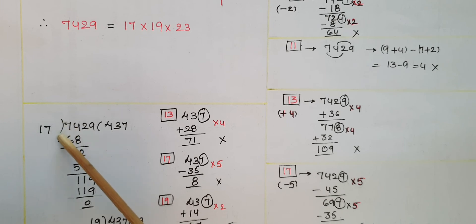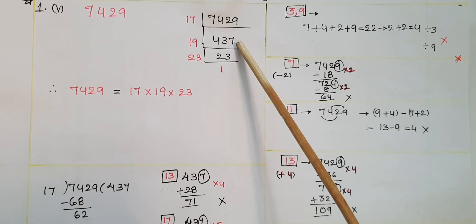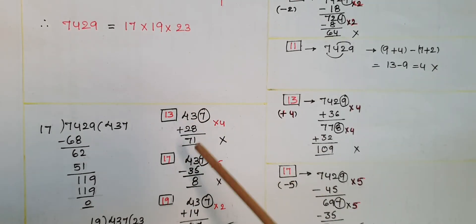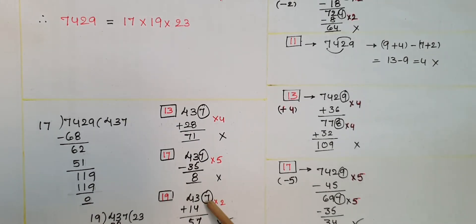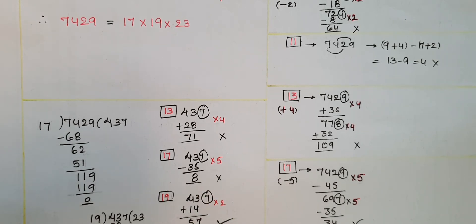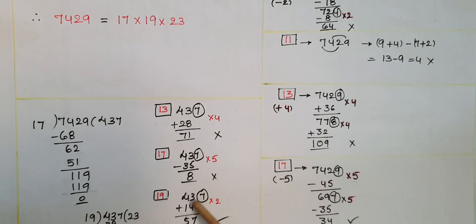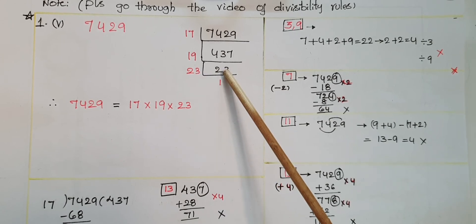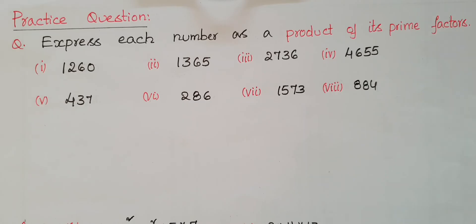Dividing 7429 by 17 gives a quotient of 437 with remainder 0. Now we factorize 437 by trying divisibility rules for primes. Checking 19: multiply last digit 7 by 2 to get 14, then 43+14 = 57, which is divisible by 19. So 437 ÷ 19 = 23, and 23 is prime. Therefore 7429 equals 17 into 19 into 23.